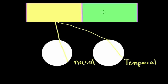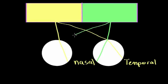Now let's look at a ray of light coming from the right side of the visual field. It would enter the right eye, be bent a little by the lens, and hit the nasal side of the right eye. Meanwhile, a ray of light from the right field entering the left eye would be bent and hit the temporal side of the left eye.